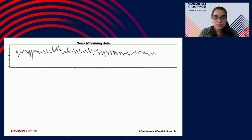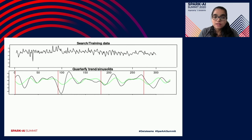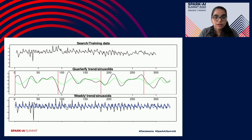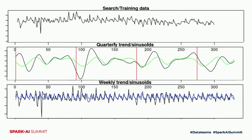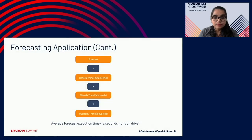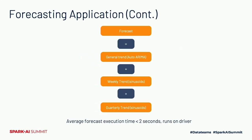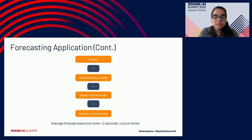For ad tech, trends vary drastically from quarter to quarter. Q1 traffic trends are entirely different from Q4. We capture quarterly trends using sinusoids, and also capture weekly trends using sinusoids. Auto ARIMA, weekly trend, and quarterly trend combined form the base forecasting model we use. We run the forecasting model on the driver node, and our average forecast execution time is less than 2 seconds — meaning within the 30-second SLA, most time is taken by the search application, while the forecasting application itself is very fast.